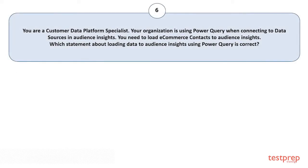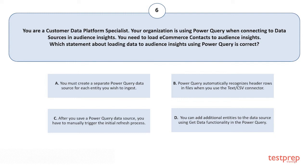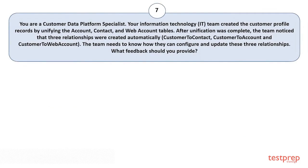Question number six: You are a Customer Data Platform Specialist. Your organization is using Power Query when connecting to data sources in Audience Insights. You need to load e-commerce contacts to Audience Insights. Option A: You must create a separate Power Query data source for each entity you wish to ingest. Option B: Power Query automatically recognizes header rows in files when you use the Text or CSV connector. Option C: After you save a Power Query data source, you have to manually trigger the initial refresh process. Option D: You can add additional entities to the data source using the Get Data functionality in Power Query. The correct answer is Option D.